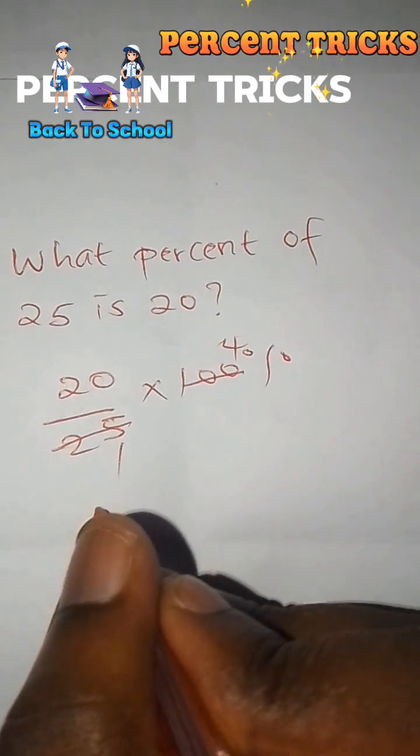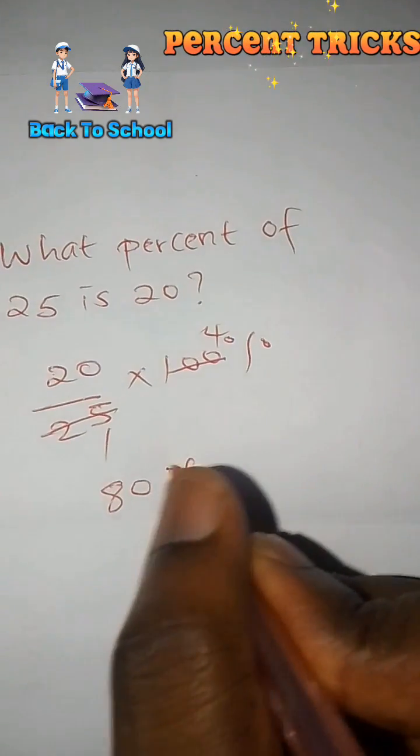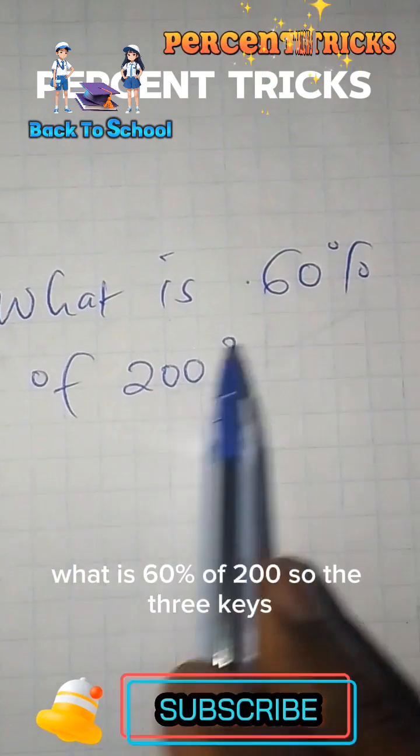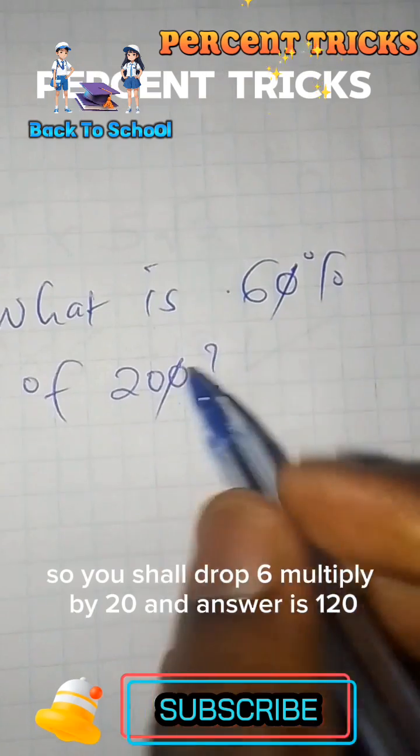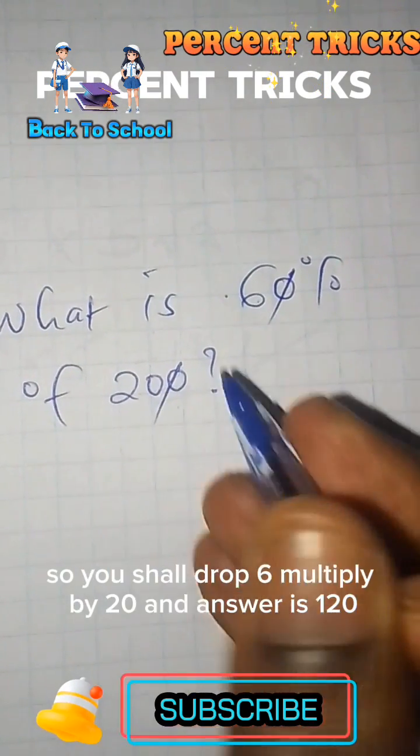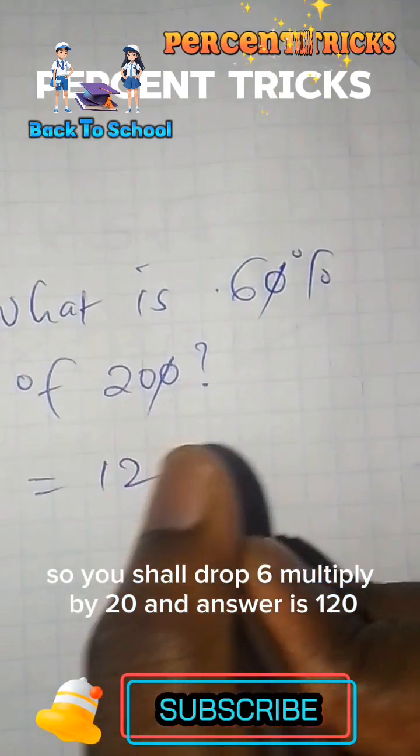So 20 multiplied by 4 is 80%. What is 60% of 200? So the trick is you take this zero, you cancel with this other zero. So we shall have 6 multiplied by 20 and the answer is 120.